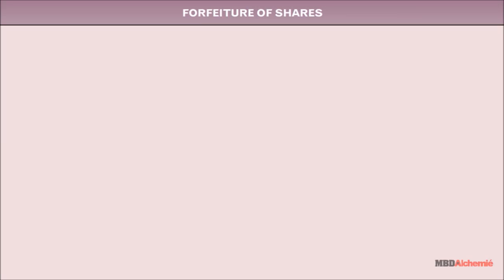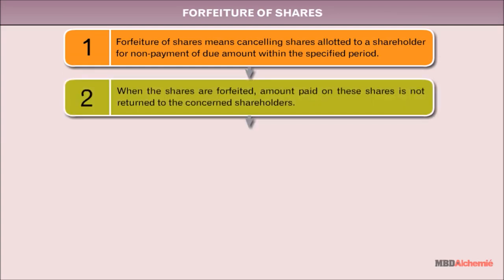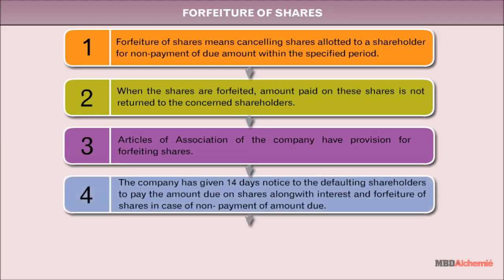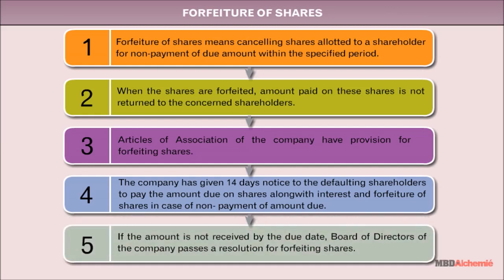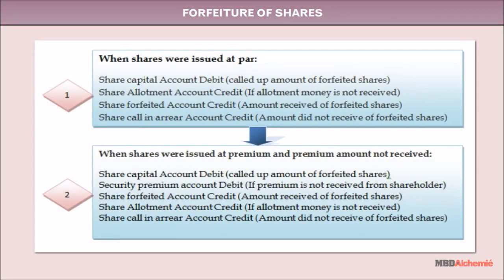Forfeiture of Shares means cancelling shares allotted to a shareholder for non-payment of the due amount within the specified period. When shares are forfeited, the amount paid on these shares is not returned to the concerned shareholders. The articles of association must have a provision for forfeiting shares. The company gives 14 days' notice to defaulting shareholders to pay the amount due along with interest. If not paid, the board of directors passes a resolution for forfeiting shares. Accounting treatment covers forfeiture of shares issued at par and at premium.